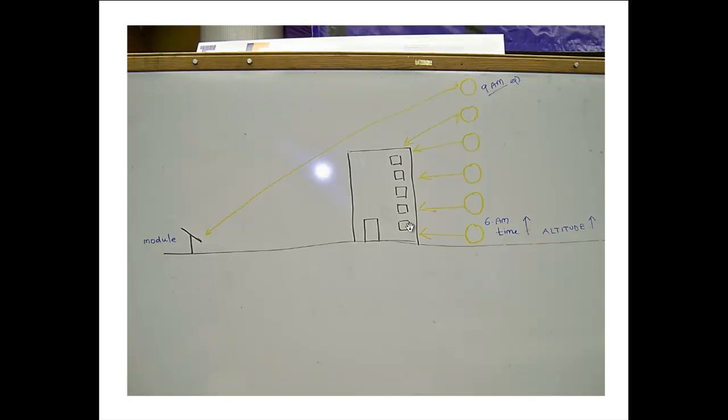And we have a building which casts shadow on this module. If you look at this side, the sun rises and as the sun rises during the day, altitude angle goes high. And until the altitude angle reaches this point, the sun reaches this point, there is no direct sunlight falling on the module. It's only the reflected beams.